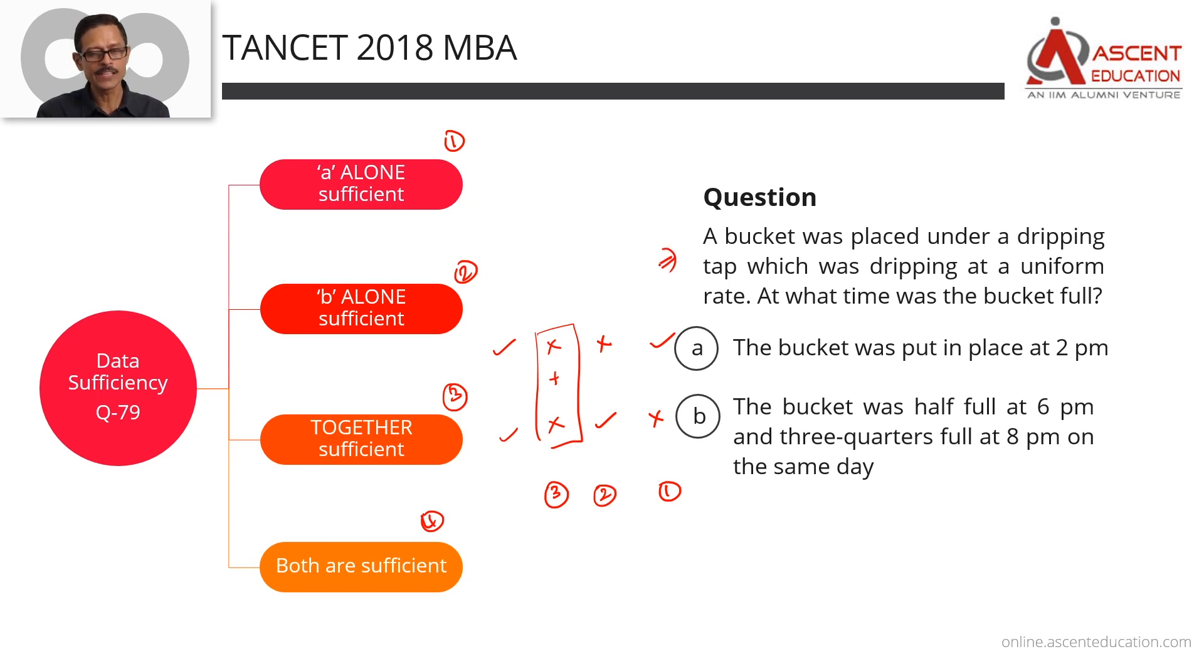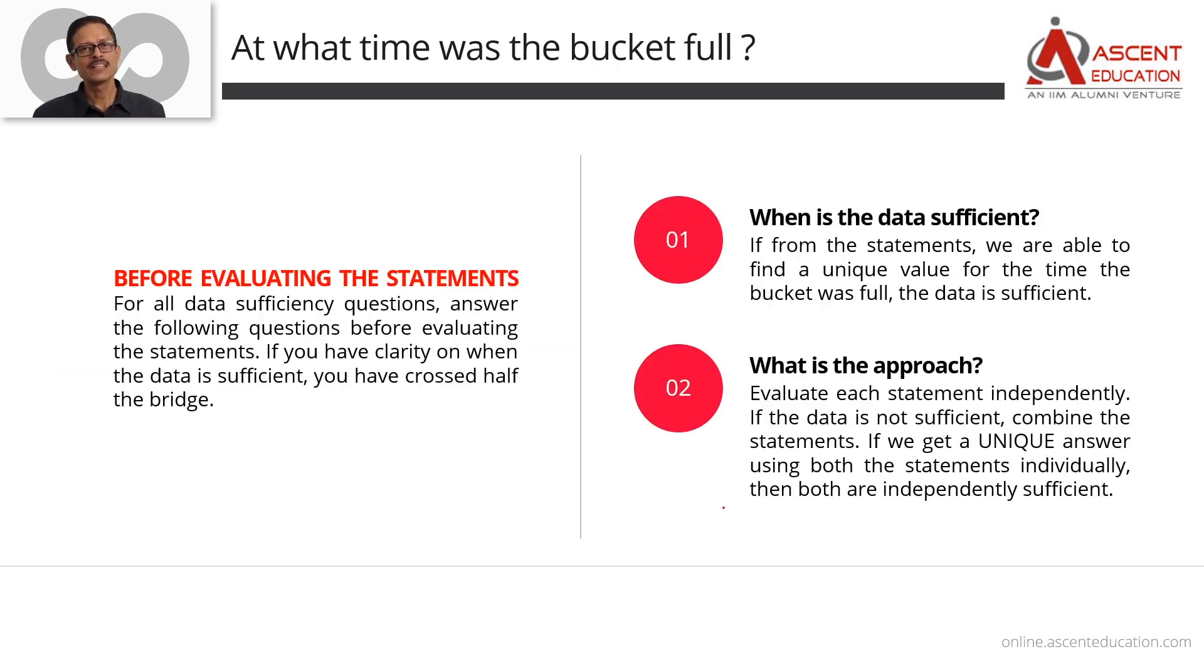Let's read the question. A bucket was placed under a dripping tap which was dripping at a uniform rate. So important information - it's dripping at a uniform rate. At what time was the bucket full? An empty bucket was placed under the tap. We need to figure out using the information in the two statements at what time the bucket was full. The data is sufficient if we're able to find one single unique value for the time at which this bucket was full.